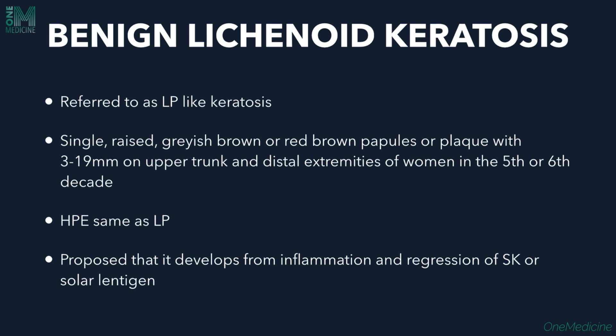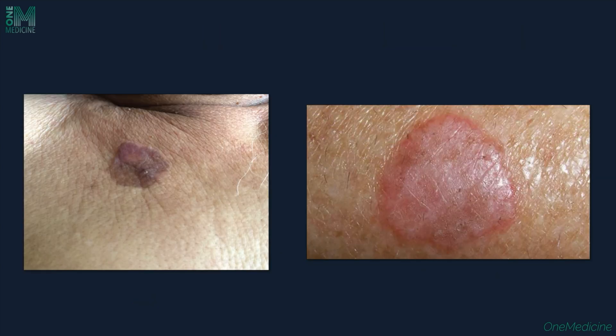Benign lichenoid keratosis, also referred to as lichen planus-like keratosis, presents with a single raised grayish-brown or red-brown papule or plaque of 3–19 mm on the upper trunk and distal extremities. It mostly affects women in the 5th or 6th decade of life. Histopathology is the same as that of lichen planus. It is proposed to develop from inflammation and regression of either seborrheic keratosis or solar lentigo.